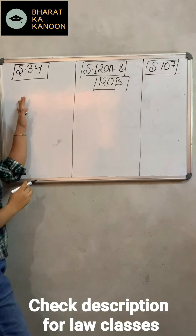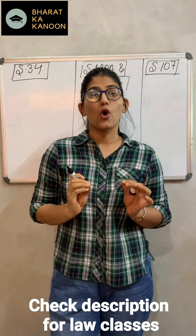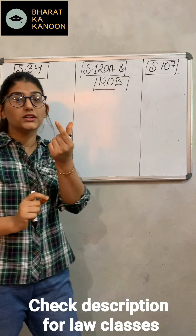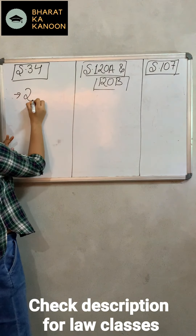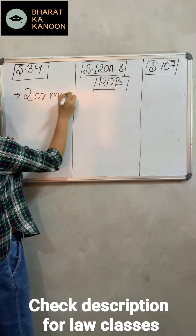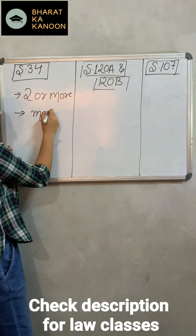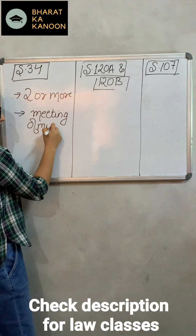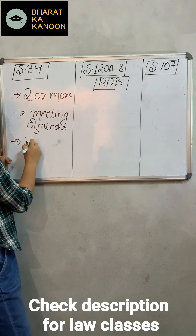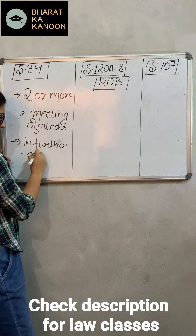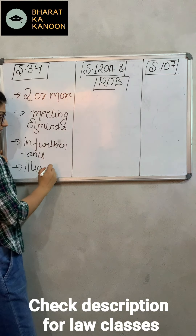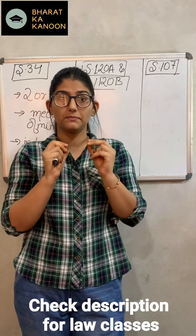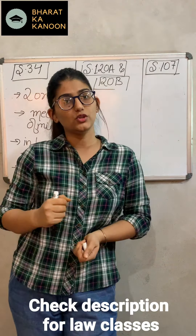Talking about section 34 — what do you mean by common intention? Common intention means that you are doing something with a meeting of minds. Two or more people — that is why the word 'two or more people' has been written in section 34. You need a meeting of minds; they must agree, must have a common intention as to what they are doing. And the act must be something illegal, something offensive. So if two or more people have a common intention — a meeting of minds upon a similar thing — which leads to an offence, then you have done a common intention.